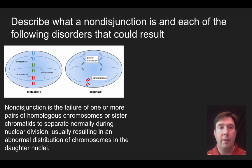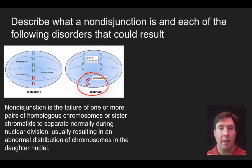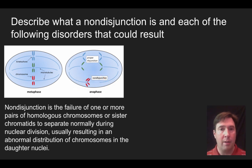In this diagram, you can see a difference between normal, proper disjunction — shown with blue and green sister chromatids being pulled apart — and below that, non-disjunction occurring, where the pairs of sister chromatids are being pulled together instead of separating. Now pause and think about what this diagram is showing.